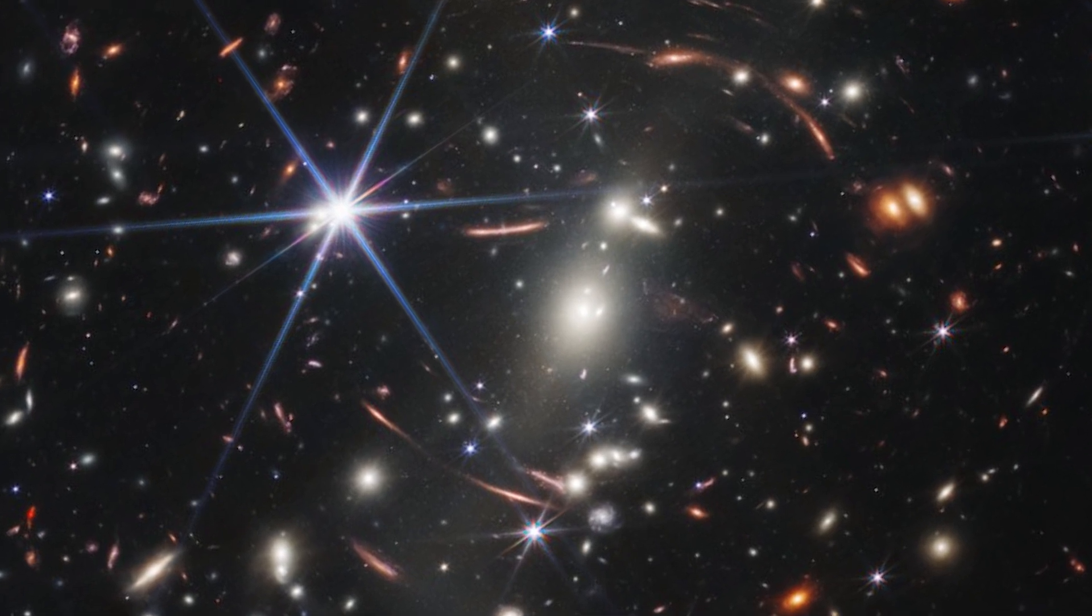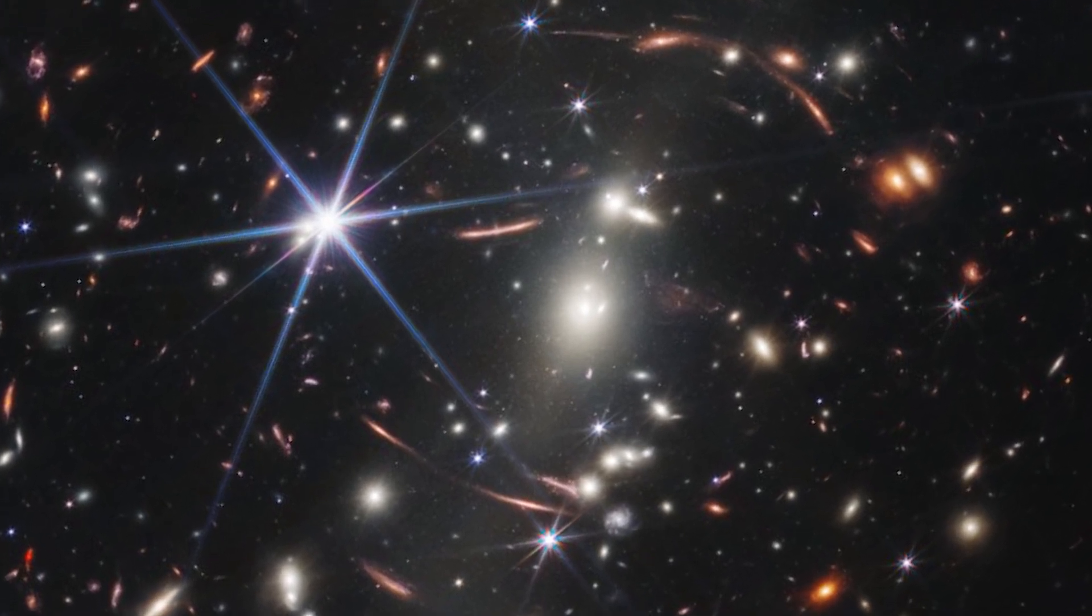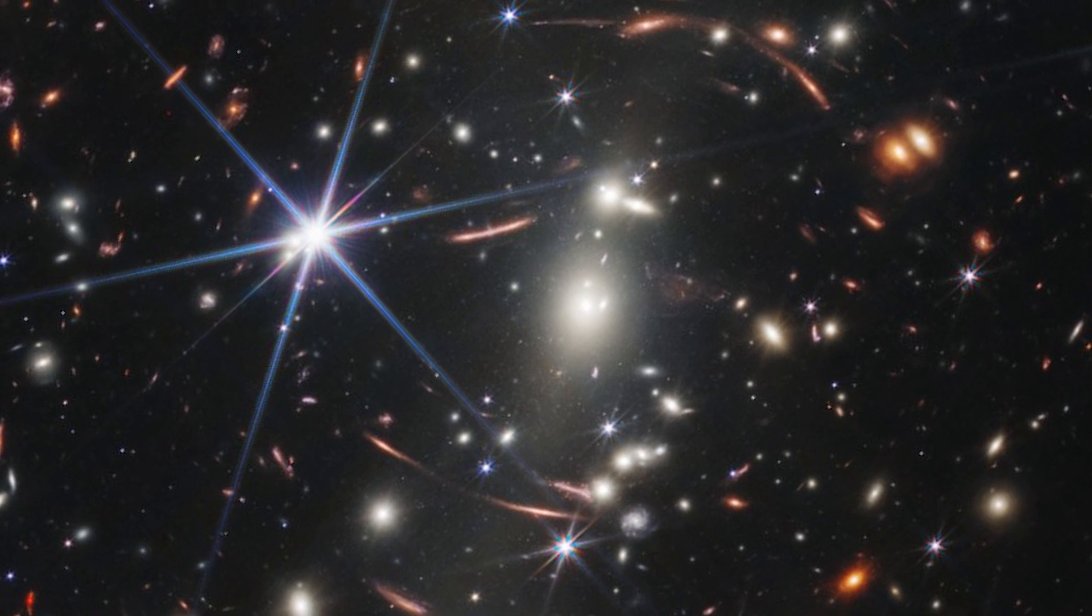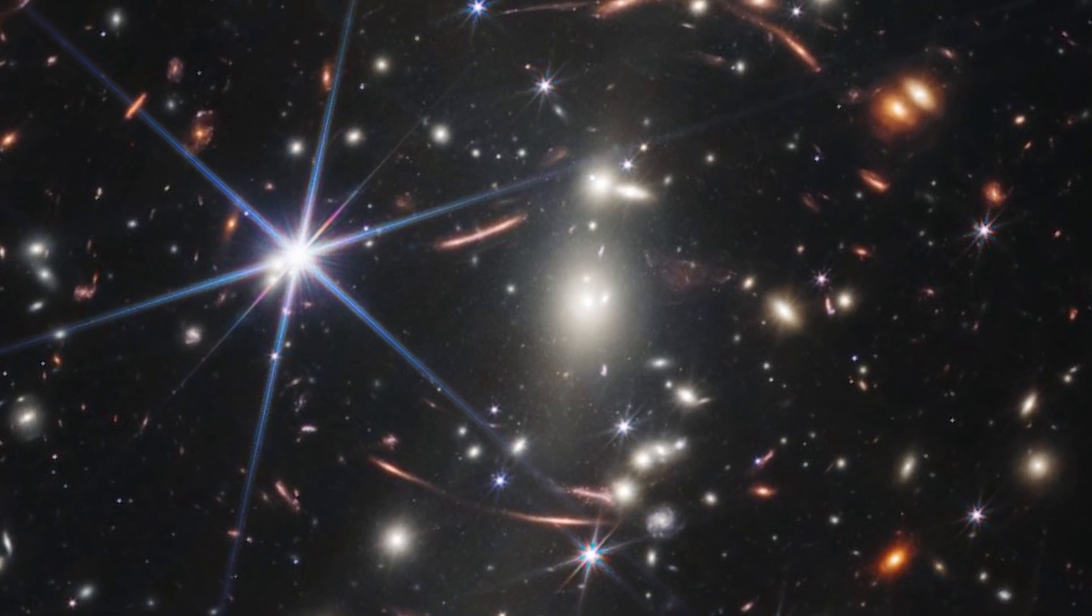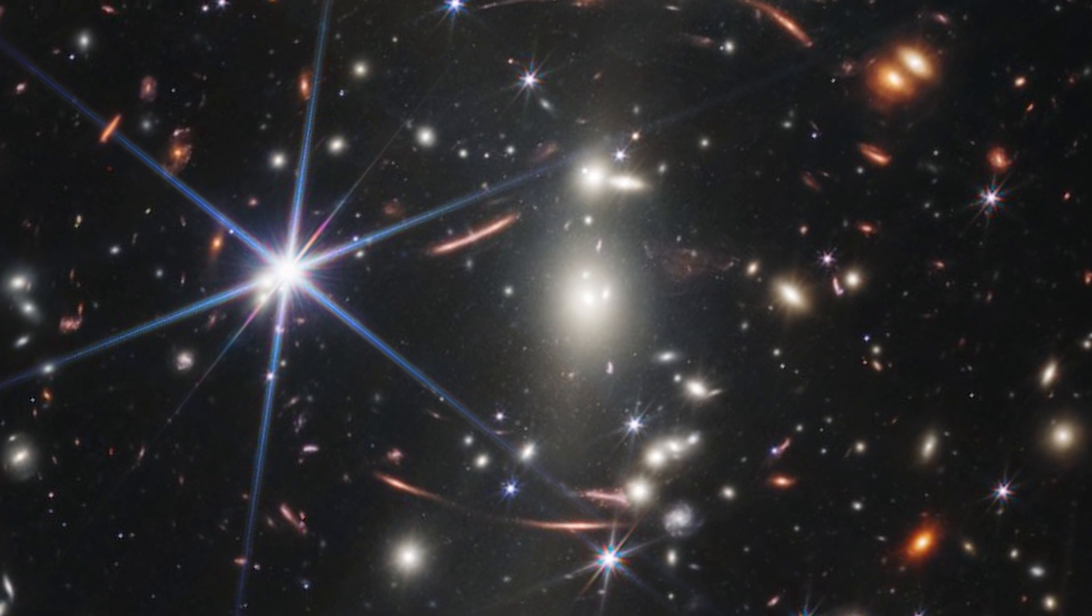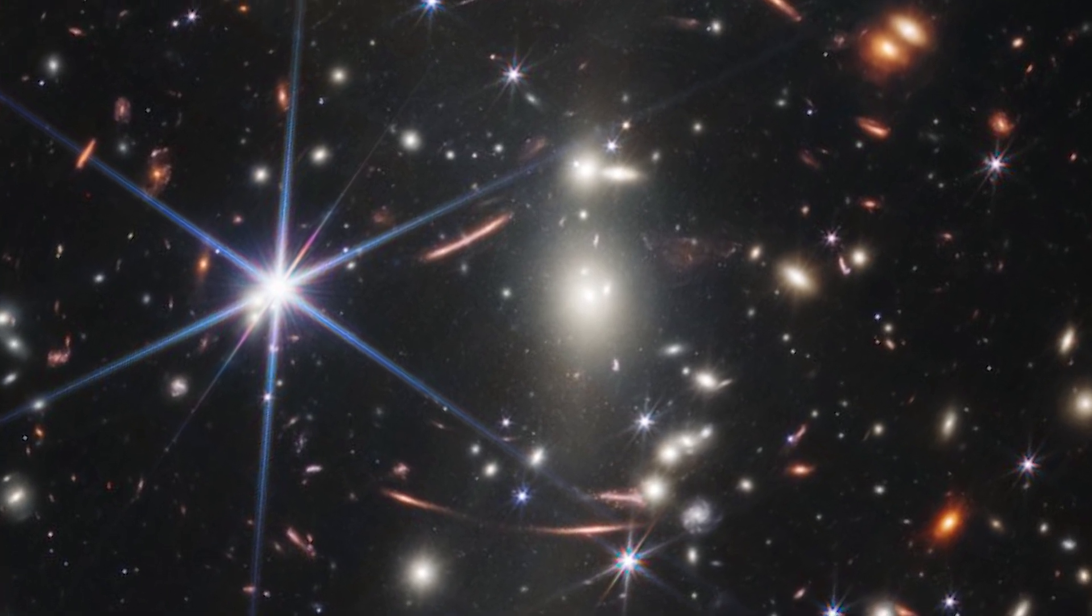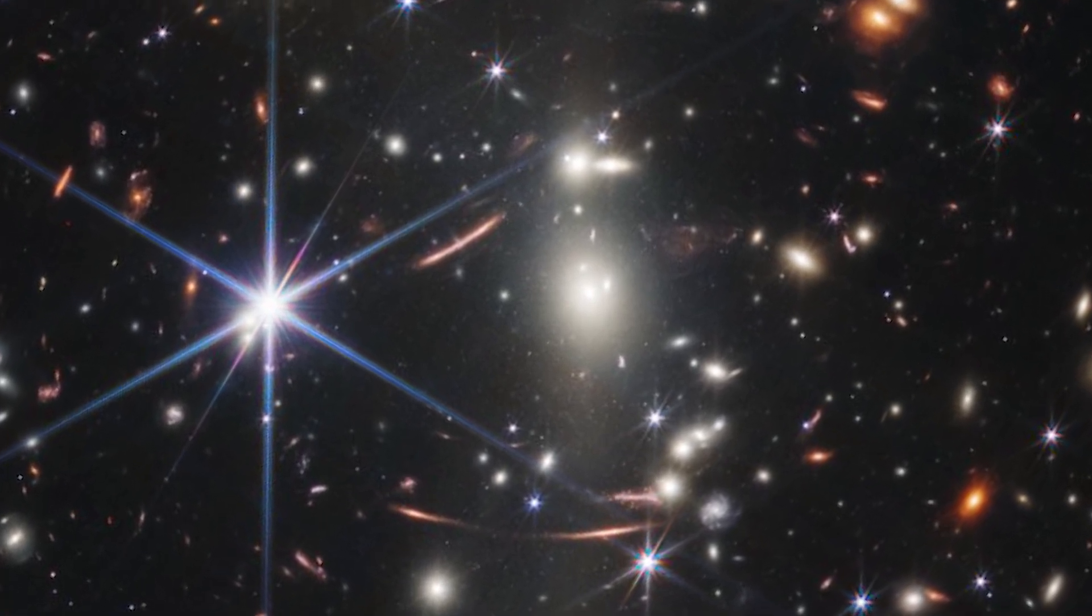They have tiny, faint structures that have never been seen before, including star clusters and diffused features. Researchers will soon begin to learn more about the galaxies' masses, ages, histories, and compositions, as Webb seeks the earliest galaxies in the universe.